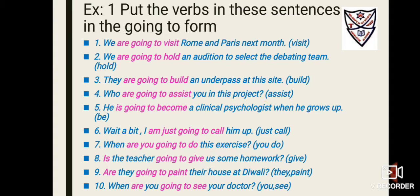Number five: 'He ___ a clinical psychologist when he grows up.' The verb is 'become' — the base form. Since we use 'he,' it's 'He is going to become a clinical psychologist when he grows up.' Number six uses 'I,' so we use 'am going to' — 'I am going to call him up' or 'I'm just going to call him up.'